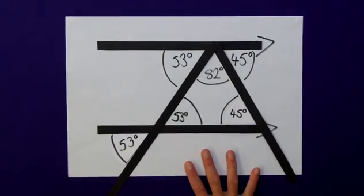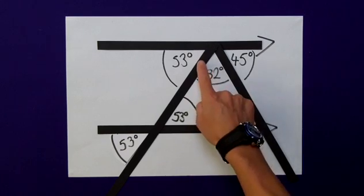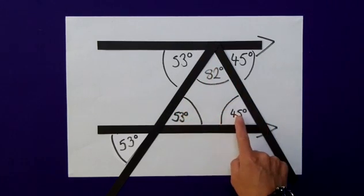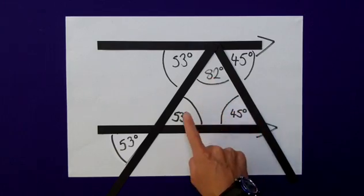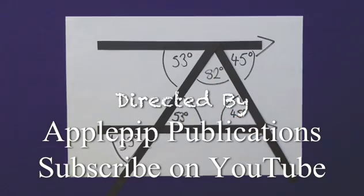The final diagram now looks like this, with all of our angles in place. We can confirm our findings using the theory of the interior angles of a triangle adding up to 180 degrees. 82, 53 and 45 do, indeed, add up to 180 degrees. Hope that helps.